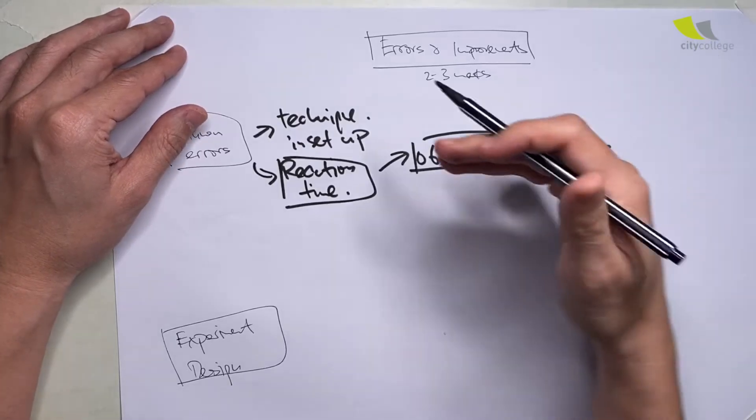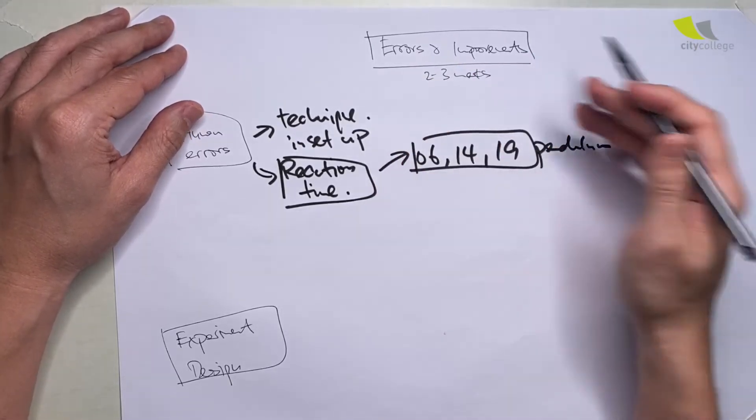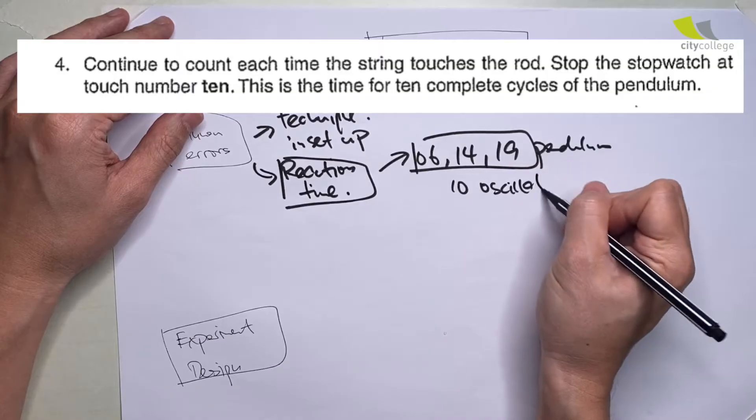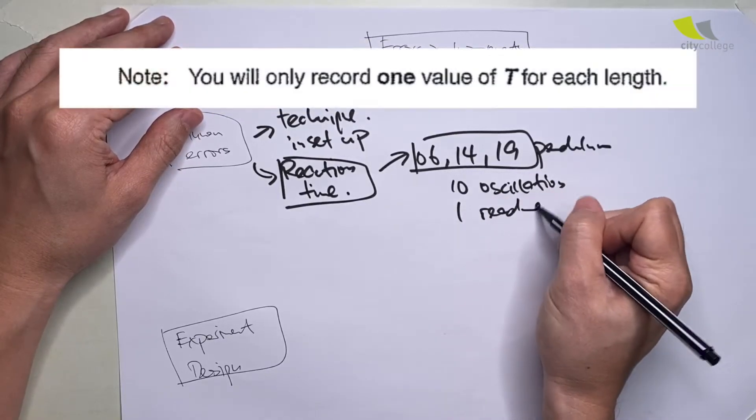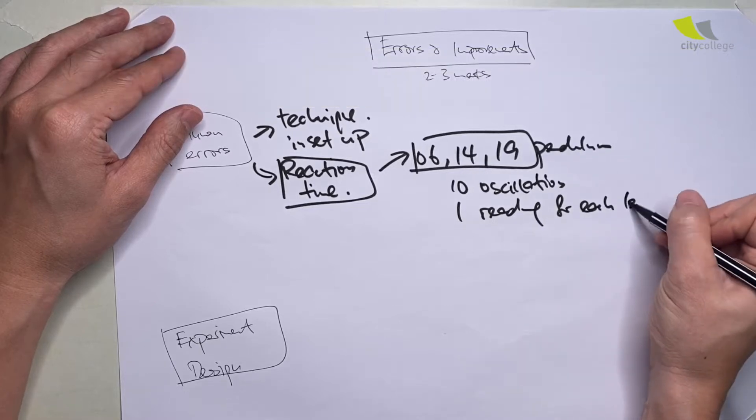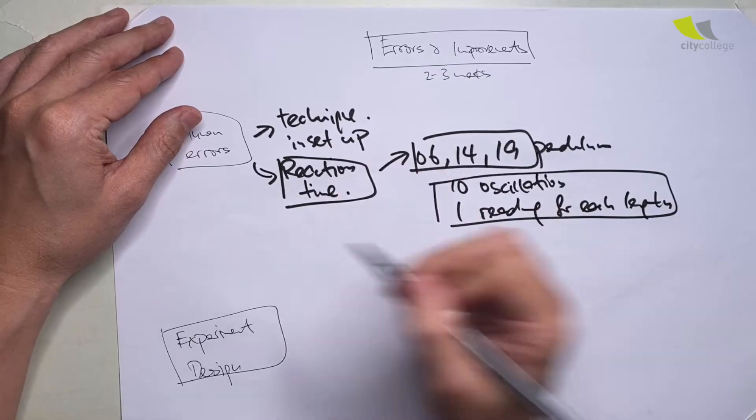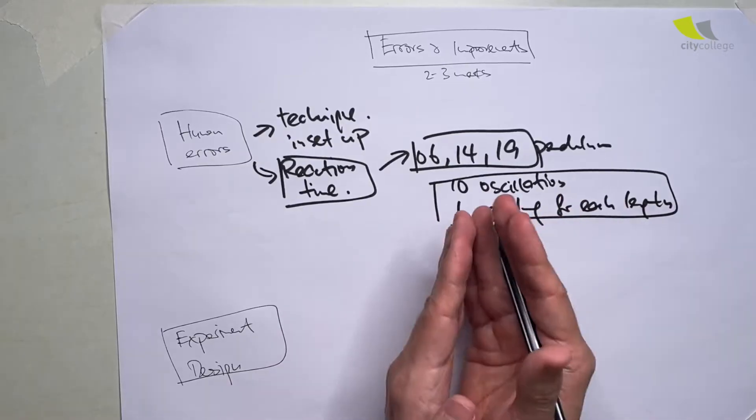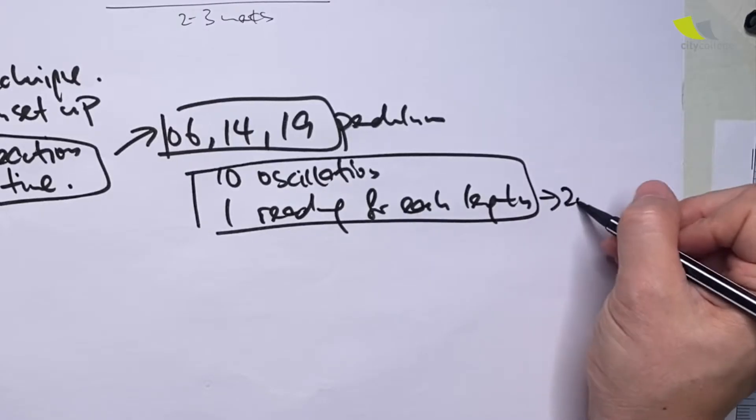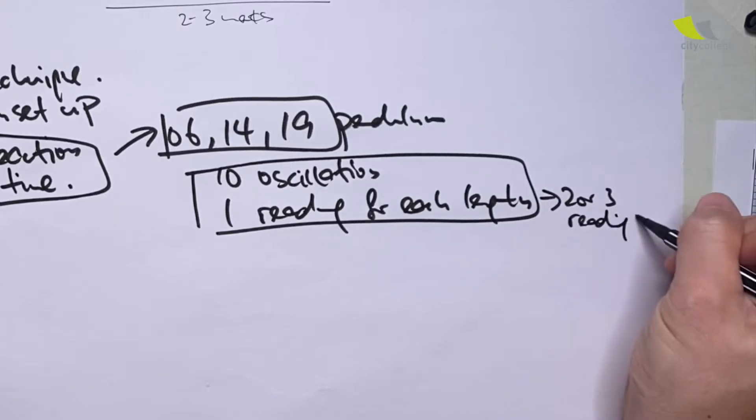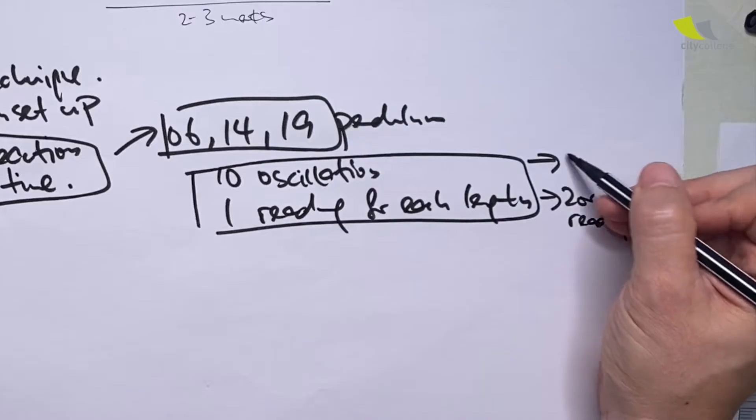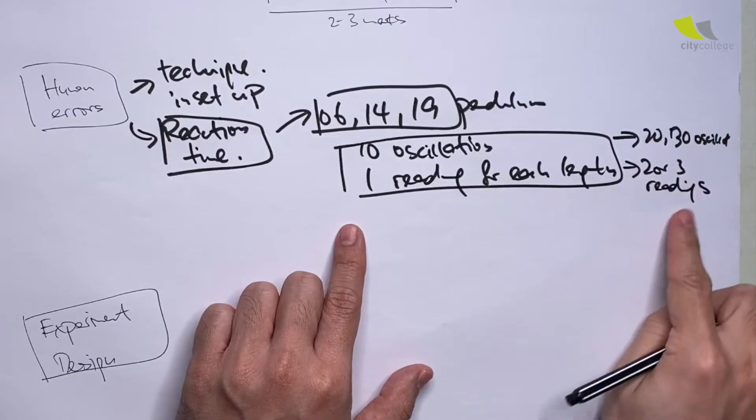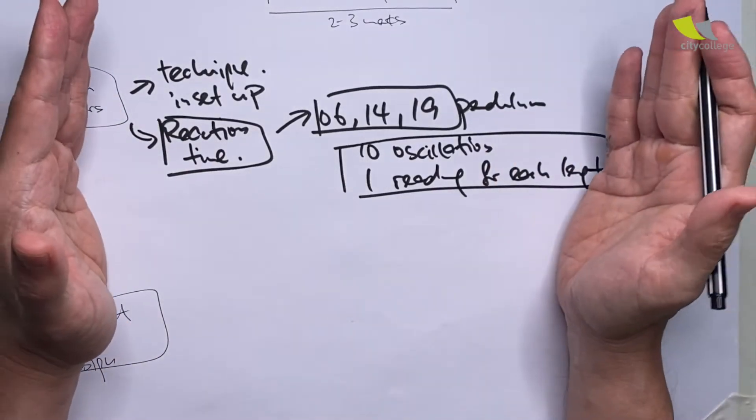Interestingly, the number of oscillations they asked to do or the number of times you are supposed to do the experiment is either they give you 10 oscillations or you simply take one reading for each length. This is a setup for your human reaction time error because we are not getting enough readings for each length to find an average. The way to improve it is to have two or three readings for each length or to increase 10 oscillations to 20 or even 30 oscillations. Why didn't they ask you to do 20, 30, or two to three readings? Because you only have 30 minutes to complete the experiment.